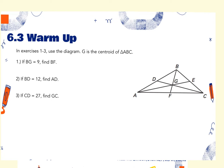So if BG is 9 and it wants you to find BF, you do 9 divided by 2, which is 4.5 — that would be what GF is. Then you add them together and you get 13.5.